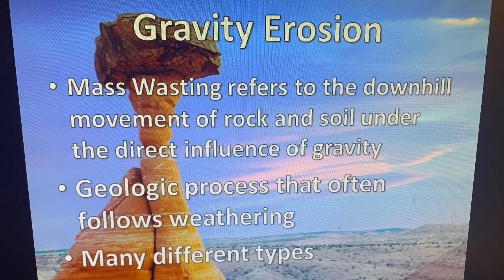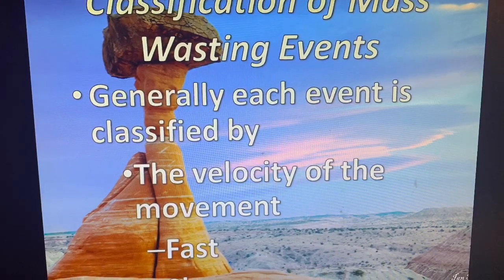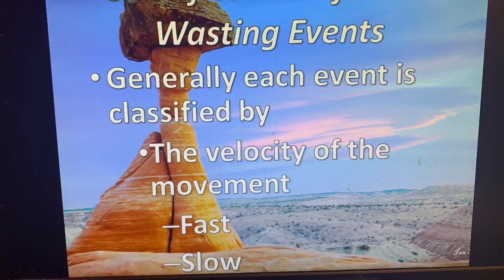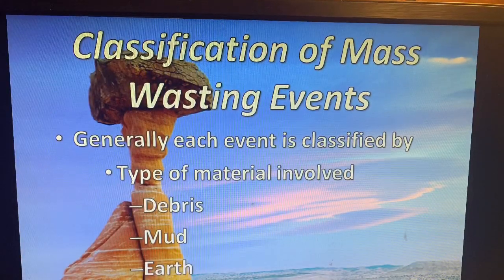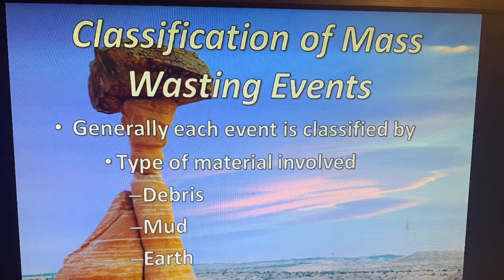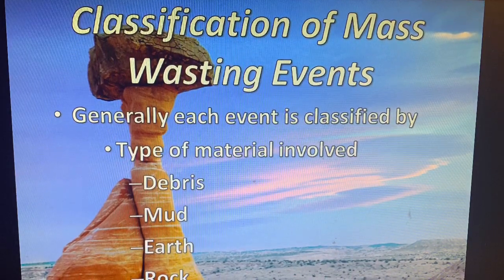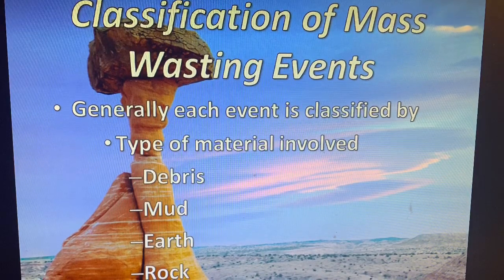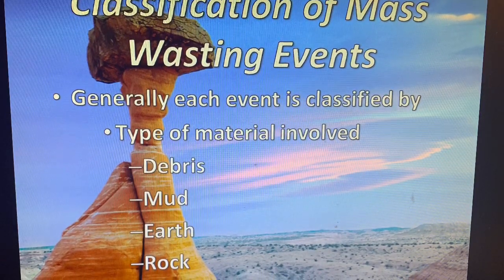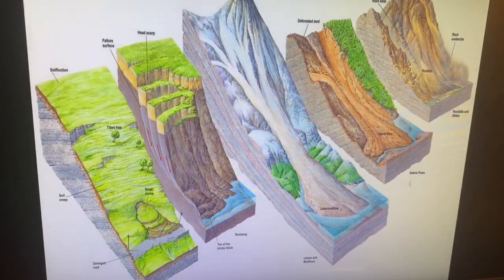That movement of sediment is what we call mass wasting. It can happen in small amounts or huge amounts, incredibly slowly over a long period of time or incredibly quickly. We also classify mass wasting events by what moves: debris — a mixture of everything including dirt, water, trees, and rocks; mud — soil saturated with water; earth — just soil; or rocks. These different materials create different types of mass wasting events.